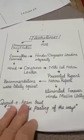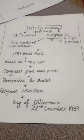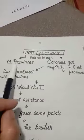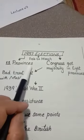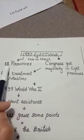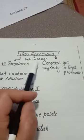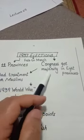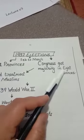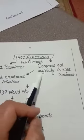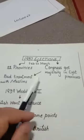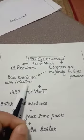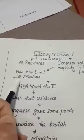After 1928, in the 1937 elections, 11 provincial assemblies participated. These elections were held from February to March across 11 provinces. Congress got a majority in 8 provinces and started their ruling period. At that time, they treated the Muslims very badly and started brutal treatment of the Muslims.